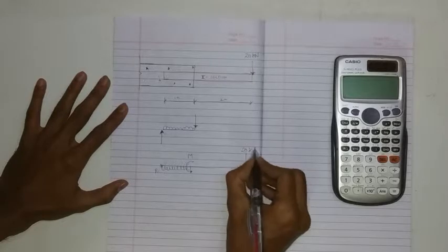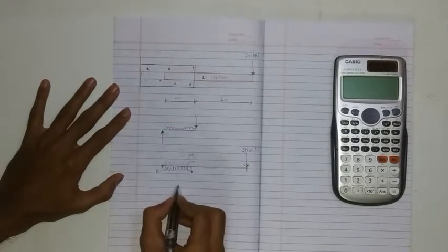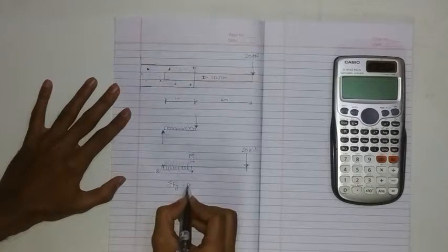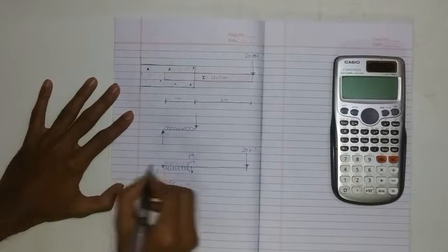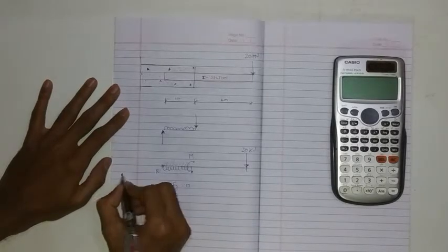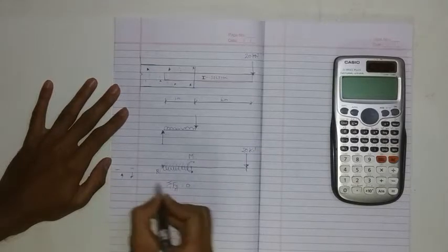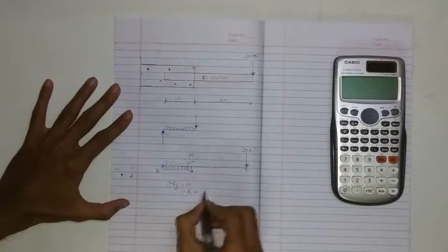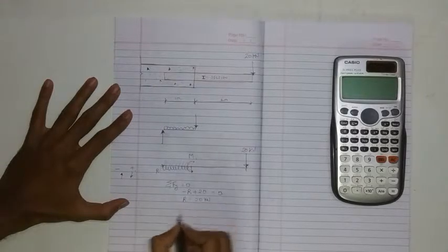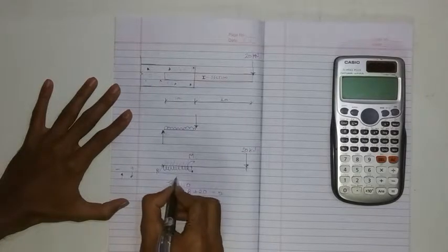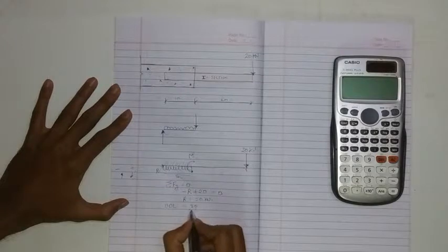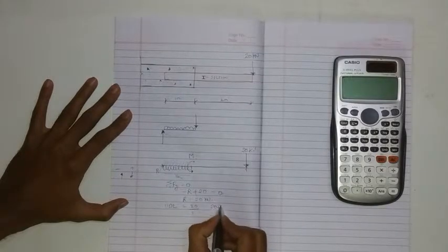Now it's simple, you just have to use the equilibrium equations. Summation Fy equal to zero. I don't have any horizontal forces. My sign convention is downward negative and upward positive, so minus R plus 20 equals zero. Therefore R is equal to 20 kilonewtons. But this R is over span of 1 meter, therefore UDL shall be 20 by 1 meter, so you get 20 kilonewtons per meter.